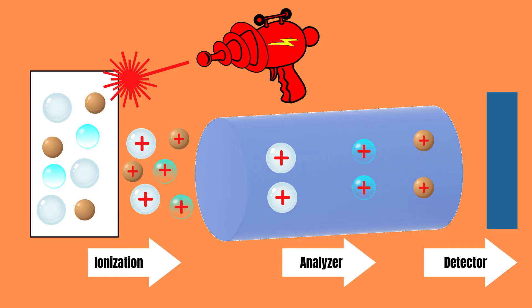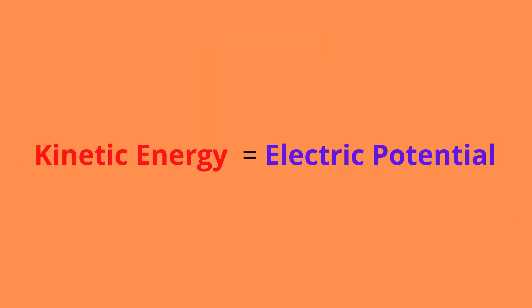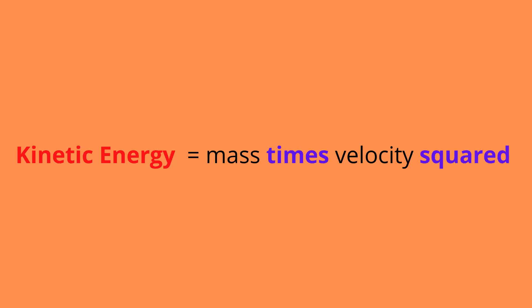This has to do with the fact that each particle is accelerated at the same electrical potential and the fact that kinetic energy is half the mass times the velocity squared. Since the kinetic energy and the electric potential energy equal each other, the smaller the particle is, the faster it must go, otherwise they won't equal each other.